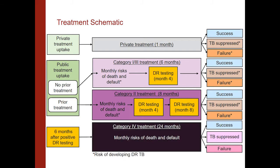We looked at patients undergoing first-line therapy and examined the RNTCP, the public funding program that treats tuberculosis, which gives six months of treatment per patient. There were monthly risks of death and default incorporated into the simulation so we could accurately model how patients behaved on these treatment programs, as well as things like drug-resistant testing, which patients undergo in first-line therapy at around month four. Patients could exit treatment either successfully treated, or with active or latent tuberculosis if they defaulted or failed treatment.